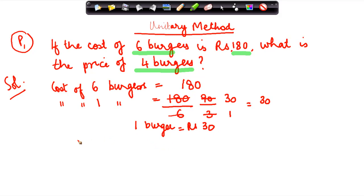So what is the cost of four burgers? Very simple. 30 into four, and this gives me 120. So the cost of four burgers is 120.